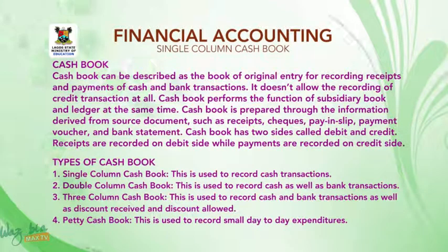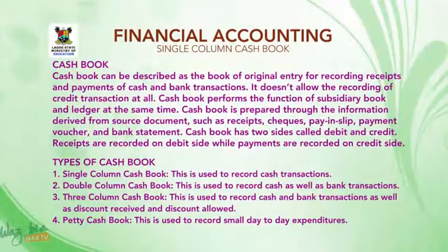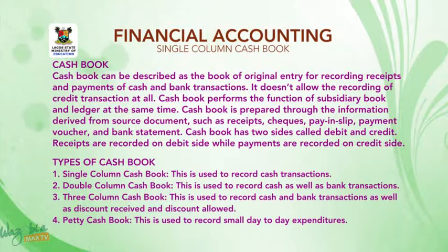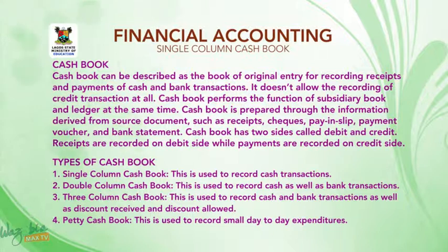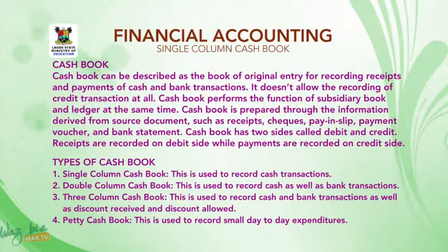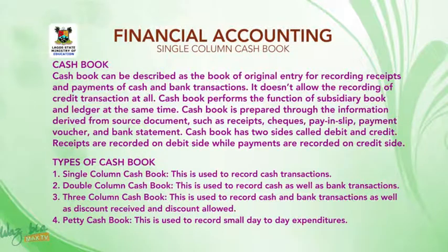2. Double-column cashbook — this is used to record cash as well as bank transactions, as well as discount received and discount allowed. 3. Petty cashbook — this is used to record small day-to-day expenditures.